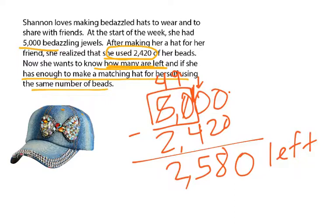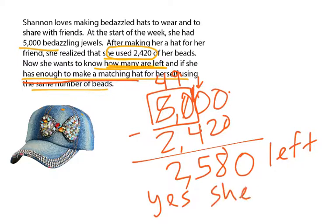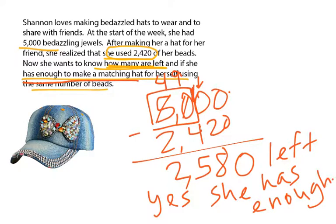That's the first part of the question. Now we're trying to see — does she have enough to make a matching hat for herself? How many did she use the first time? The first time she used 2,420. So yes, she does have enough to make a matching hat for herself. Now, if I wanted to ask a follow-up question, I could also ask how many beads would she have left over. I would simply take 2,580 and subtract 2,420 from that number to see how many she'd have left after her two hats.